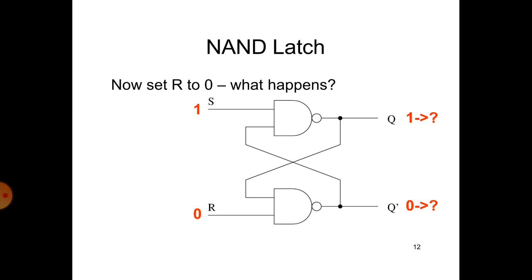Now set R to 0 — what happens? This slide shows a 2 NAND gate NAND latch. We are using 2 inputs, S and R. S will be 1, which means the output will be 1 — that is the set state. According to the truth table and excitation table, S=1 means set state, so Q will be 1 and Q̄ will be 0. The first NAND gate receives Q̄ as its second input, so the inputs are 0 and 1, which gives output 1 according to the NAND truth table.